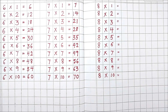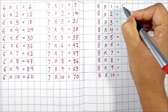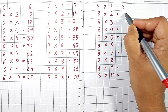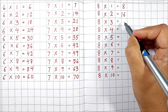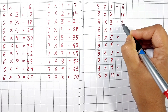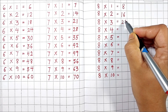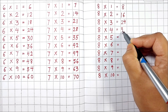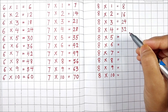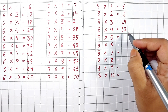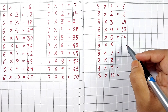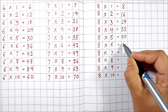Table of 8. 8 1's are 8. 8 2's are 16. 8 3's are 24. 8 4's are 32. 8 5's are 40. 8 6's are 48.